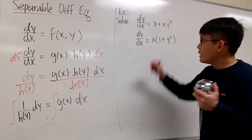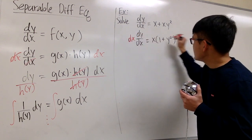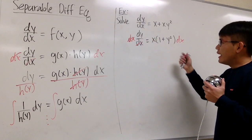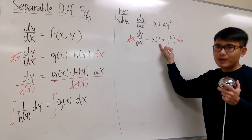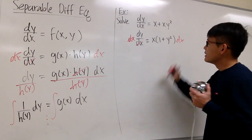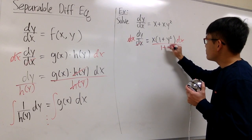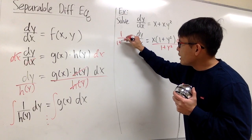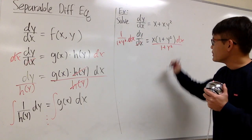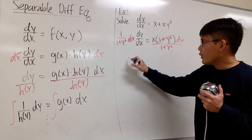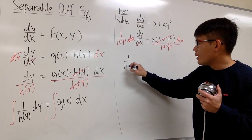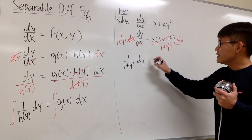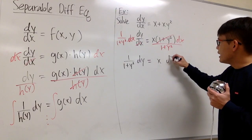Now I want to show you all the steps. Let's multiply dx on both sides — the dx will cancel and we'll have dy equals x times (1 plus y squared) dx. Then we have to divide by (1 plus y squared) on both sides to bring it to the other side. So on the left-hand side we'll have 1 over (1 plus y squared) with dy, and this equals x dx.